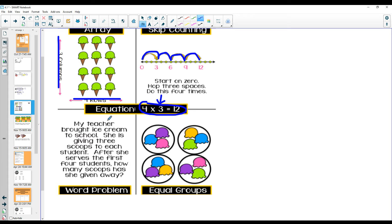Here we could see it in a word problem. My teacher brought ice cream to school. She is giving three scoops to each student. After she serves the first four students, how many scoops has she given away? Well, she serves four students, one, two, three, four. Those are the students. Remember that each student, a lot of times when we're doing multiply, you'll hear the word each. Each student was given three scoops. So this person got three scoops, this person got three scoops, this person got three scoops, then this person got three scoops. And if we added all those together, three times four would give us twelve.